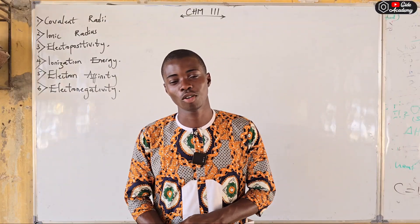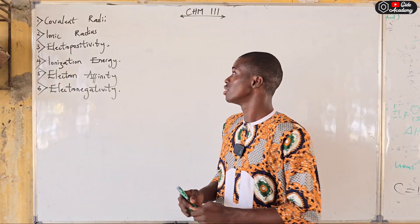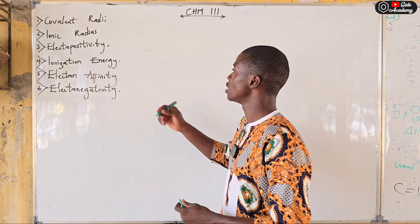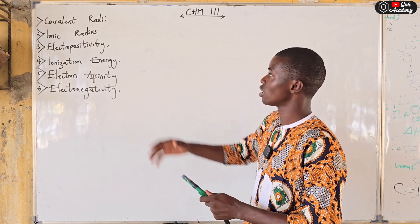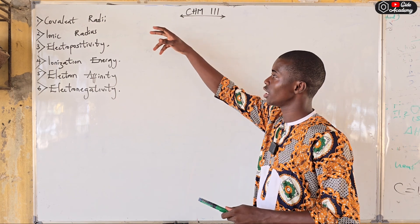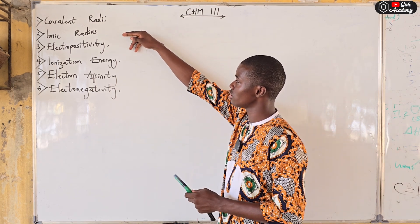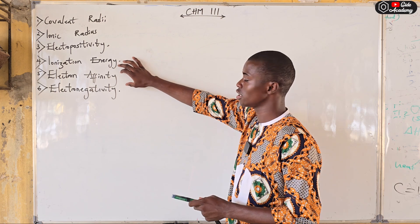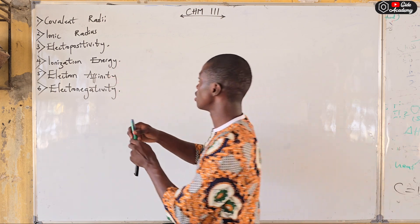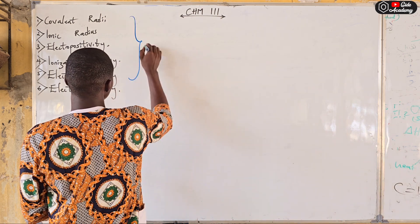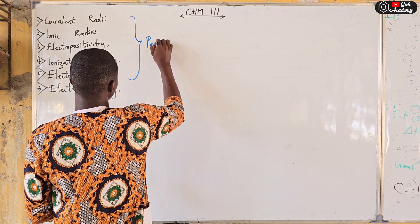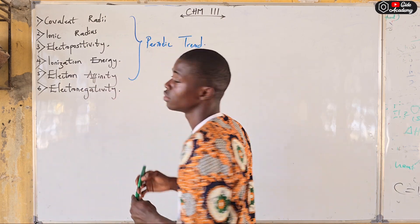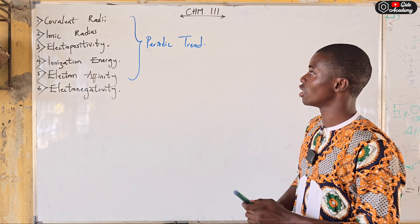Good day everyone, once again I welcome you to the episode of the periodic table. For this class we are working on the periodic trends, which includes covalent radii, ionic radii, electropositivity, ionization energy, electron affinity, and electronegativity. These are all called the periodic trends. So let's pick them one after the other.